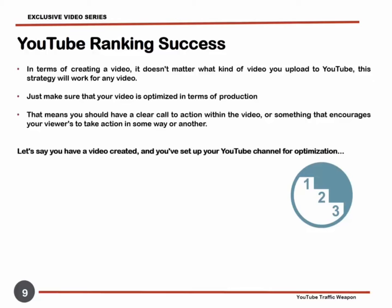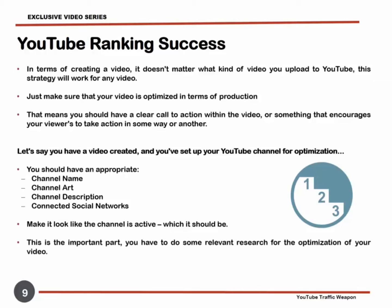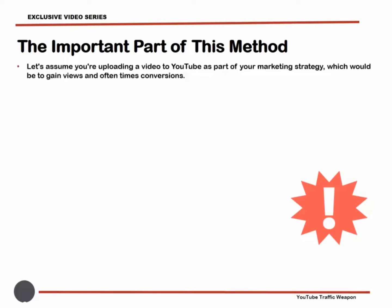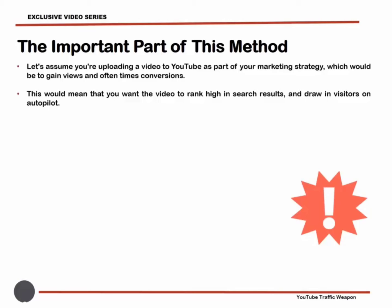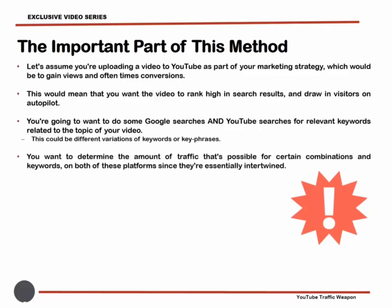Let's say you have a video created and you've set up your YouTube channel so that the home page is fully optimized. You should have an appropriate channel name, art, a description, connected social networks, and make it look like the channel is active. Now, the important part: you have to do some relevant research for the optimization of your video. Do Google searches and YouTube searches for relevant keywords related to the topic of your video — different variations of keywords or key phrases — to determine the amount of traffic possible for certain combinations on both platforms, since they're essentially intertwined.